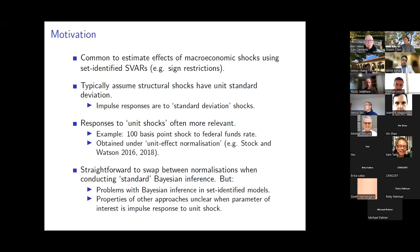In many circumstances, the impulse responses under the unit standard deviation normalization aren't the impulse responses of interest for answering our economic questions. What we arguably should be interested in are the impulse responses to so-called unit shocks — for example, what's the effect of a 100 basis point shock to the federal funds rate, or a 25 basis point shock to the cash rate.